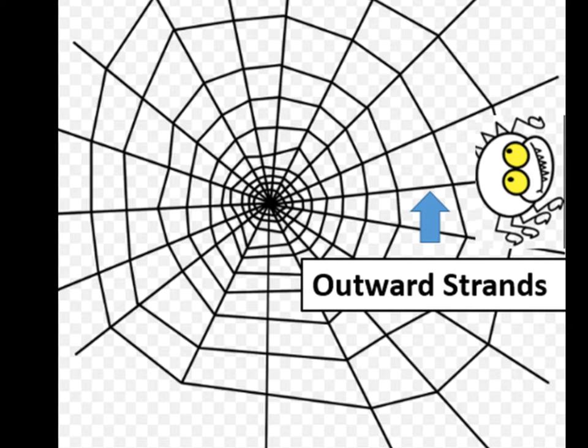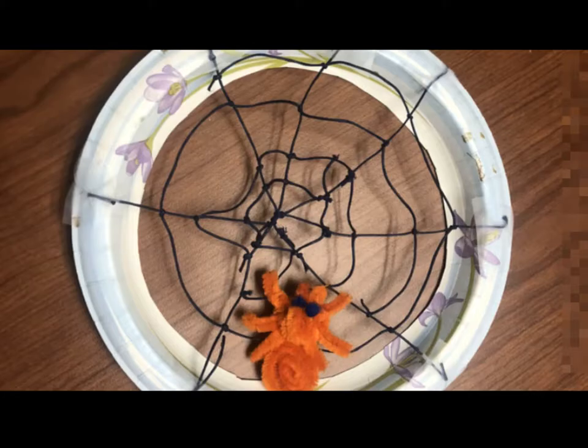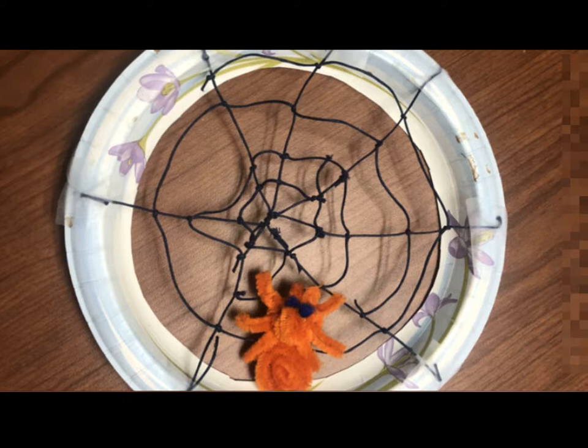The spider then starts to make V-shaped strands that extend outwardly or radially from the center. And finally, the spider strengthens the center of the web with circular strands as it works its way from inside out.